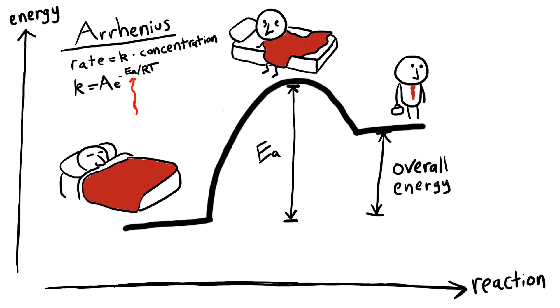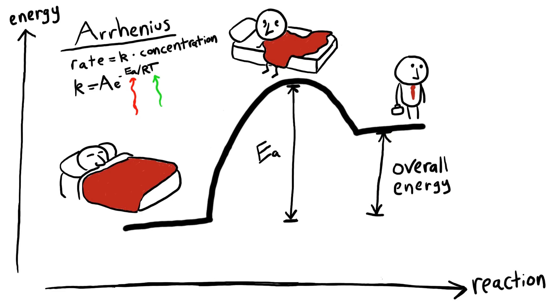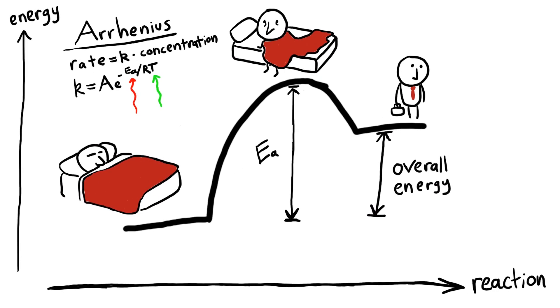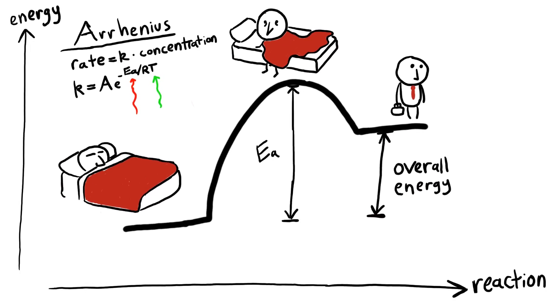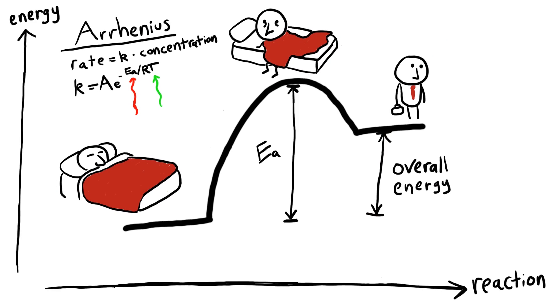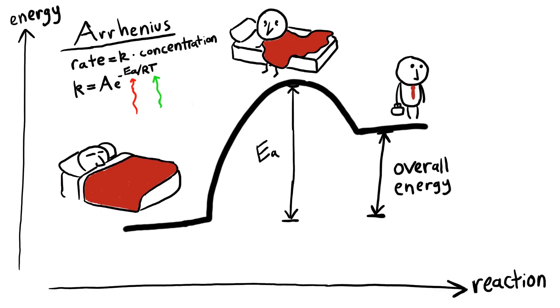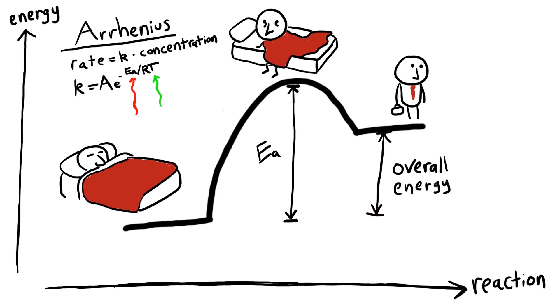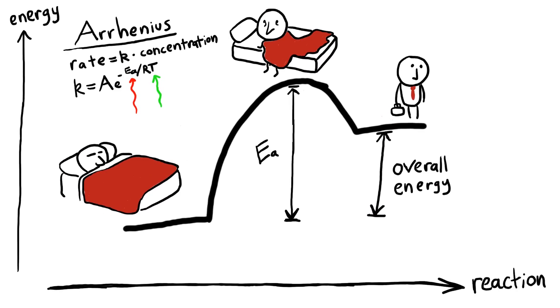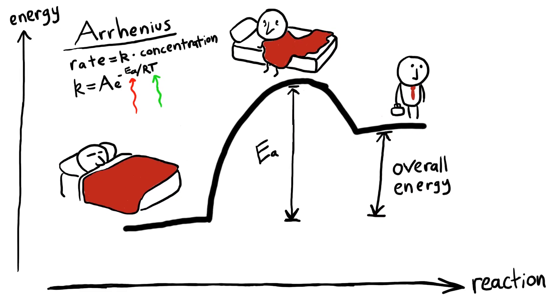You might also notice that the Arrhenius equation depends on temperature. When the temperature is warmer, molecules get excited more easily, and you have the energy to cross the barrier better. The temperature is analogous to, you guessed it, temperature in your house. When it's warmer outside, it's certainly easier to leave your warm cozy bed.